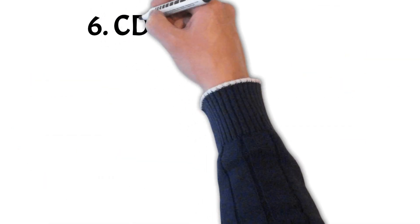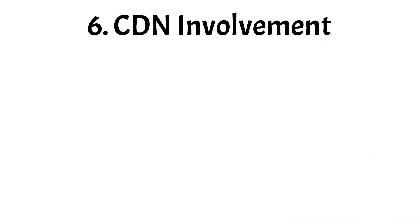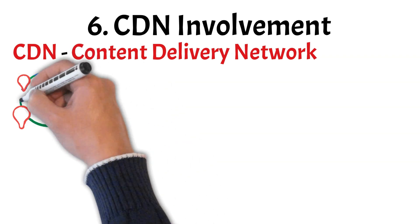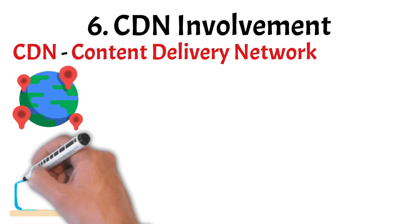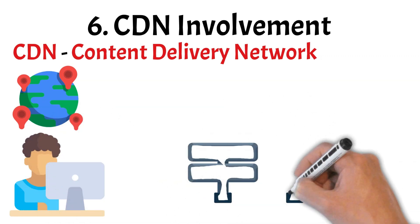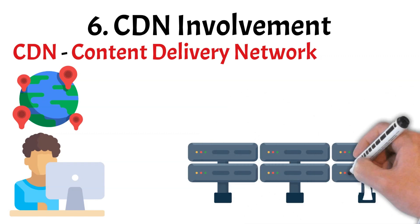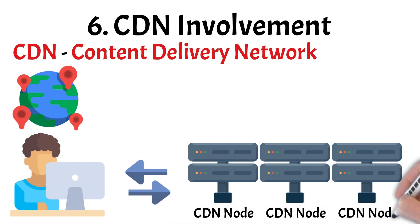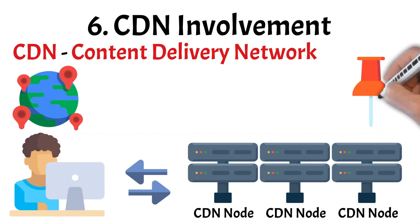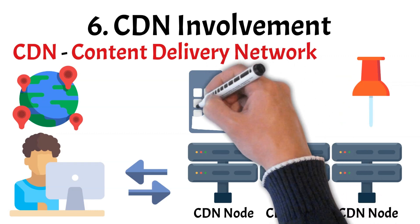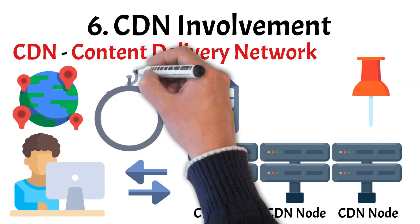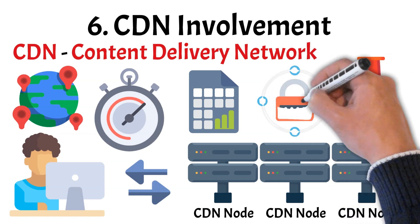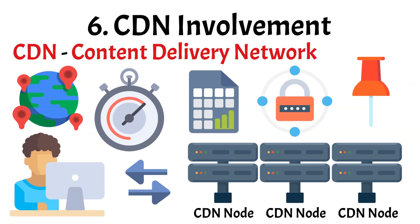After the browser sends the HTTP request, it doesn't always get a response directly from YouTube's main servers. Instead, the request is often handled by a CDN, or Content Delivery Network — a network of servers distributed across the globe. These CDN servers store copies of static content like images, scripts, and videos, and are strategically placed closer to users to reduce delays. If the requested content is available on a nearby CDN server, it's delivered quickly, avoiding the need to contact YouTube's central origin server. If the content isn't cached locally, the CDN fetches it from the origin server and delivers it to the user. This helps reduce latency, speed up page loading, and decrease the load on YouTube's core infrastructure.